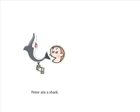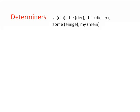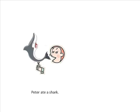This shows up in the form of any determiner you use — that's words like a, the, this, some and my — the ending on any adjectives, the form of any pronoun — that's words like I, you, me, we or us — and in some cases, in the form that the noun takes. In our example, the only determiner, adjective or pronoun is the determiner 'a' before 'shark.'